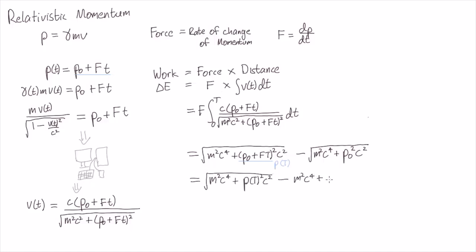So change in energy of an object is its final energy minus its initial energy. So maybe the first term here represents the final energy of the object, and the second term represents its initial energy.